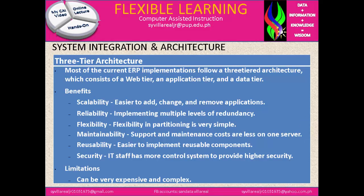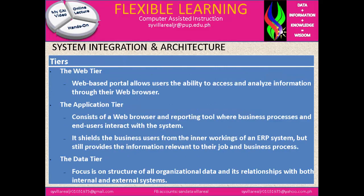After the benefits, we have limitations. It can be very expensive and complex. The web-tier is a web-based portal that allows users the ability to access and analyze information through their web browser. The application-tier consists of web browser and reporting tools for business processes, and end-users interact with the system. It also shields business users from the inner workings of an ERP system but still provides information relevant to their job and business process. The third is the data-tier, which focuses on the structure of all organizational data and its relationship with both internal and external systems.